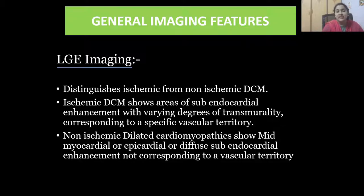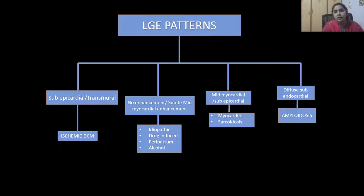Late gadolinium enhancement imaging distinguishes ischemic from non-ischemic DCM. Ischemic DCM shows areas of sub-endocardial enhancement with varying degrees of transmurality corresponding to a specific vascular territory, whereas non-ischemic DCM shows mild myocardial or diffuse sub-endocardial enhancement not corresponding to any vascular territory. LGE patterns: sub-epicardial or transmural enhancement indicates ischemic DCM. No enhancement or subtle mid-myocardial enhancement can be due to drug-induced, peripartum, alcoholic, or idiopathic causes. Mid-myocardial or sub-epicardial pattern occurs in myocarditis or sarcoidosis, whereas diffuse sub-endocardial LGE is seen in amyloidosis.